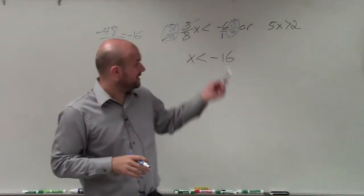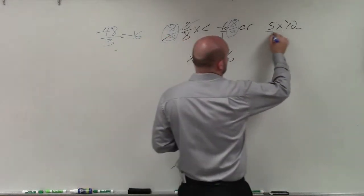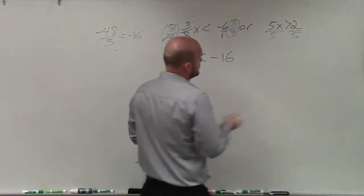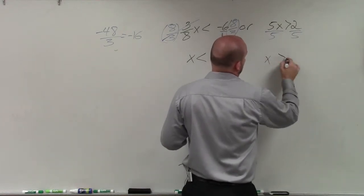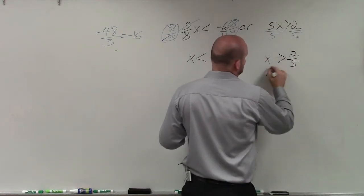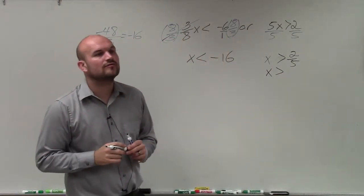Now, the next one is, I have x being multiplied by 5. So I need to divide by 5. So x is going to equal, oh, I'm sorry, x is greater than 2 fifths, which you could also write, I think, as 40%.